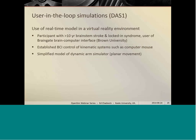The last example I want to talk about is what motivated us in the first place, which was the ability to do user-in-the-loop simulations. So in this case, we used our real-time model in a virtual reality environment and we wanted to assess the potential of somebody with complete paralysis to control a non-linear dynamic system such as an arm implanted with an FES system that would restore movement through stimulating the muscles. So in order to do this, we worked with a participant who more than ten years previously had a brainstem stroke and had locked-in syndrome. And she was a user of a BrainGate brain-computer interface.